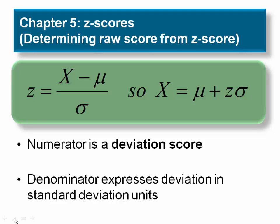Although the z-score equation works well for transforming x-values into z-scores, it can be awkward when you're trying to work in the opposite direction and change z-scores back into x-values.